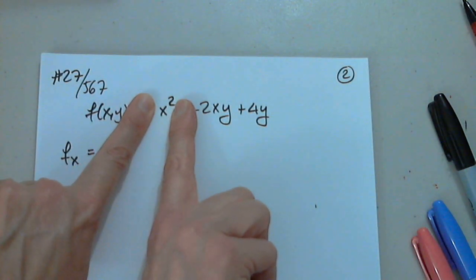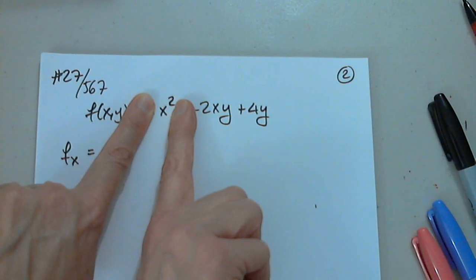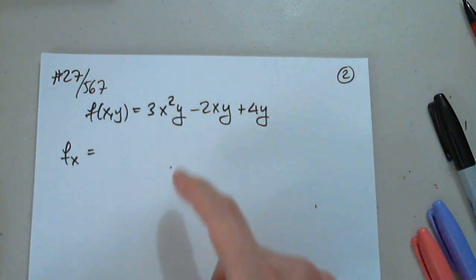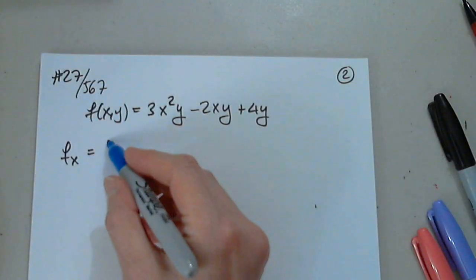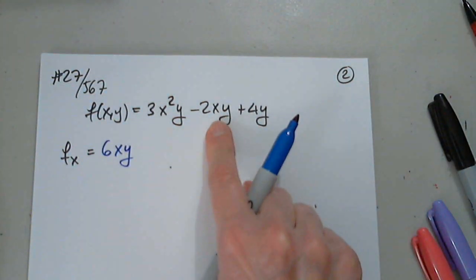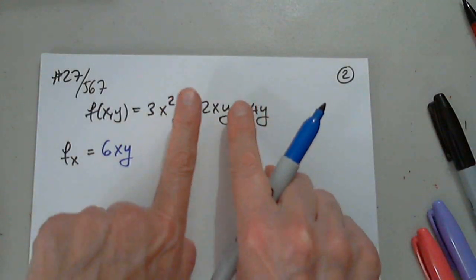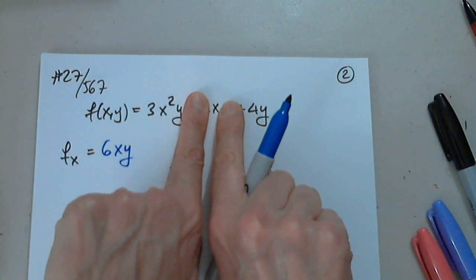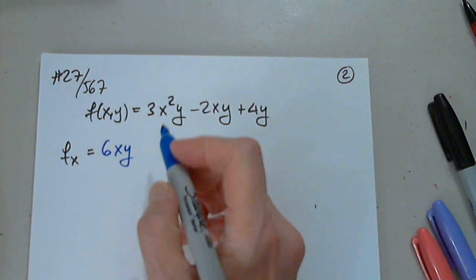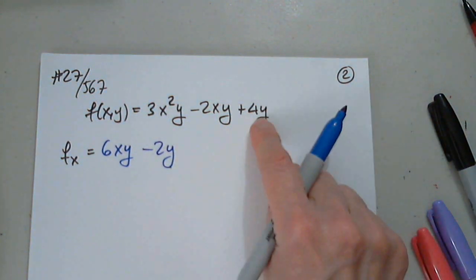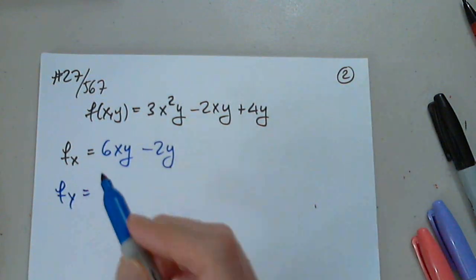So we are differentiating with respect to x. Everything else is considered constant. We differentiate x squared and we get 2x. 2x multiplied by 3y. 6xy. That's it. We are differentiating with respect to x. Minus 2y. Yes, with minus. Very good. We differentiate with respect to x. 0. Perfect.